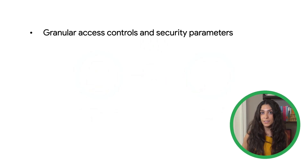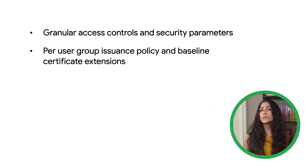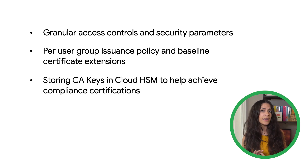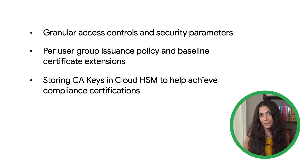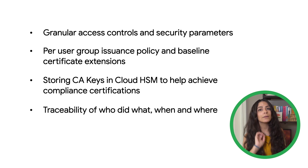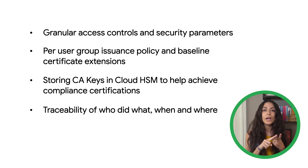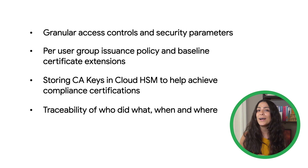CAS does this by defining granular access controls and virtual security parameters, defining per-user group issuance policy and baseline certificate extensions, storing CA keys in Cloud HSM, which is FIPS 140-2 Level 3 validated, and can help achieve various compliance certifications like FedRAMP and SOC, and by obtaining logs and gaining visibility into who did what, when, and where with cloud audit logs.